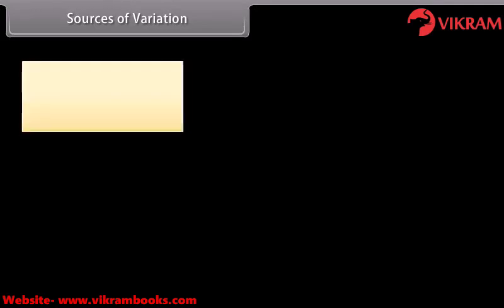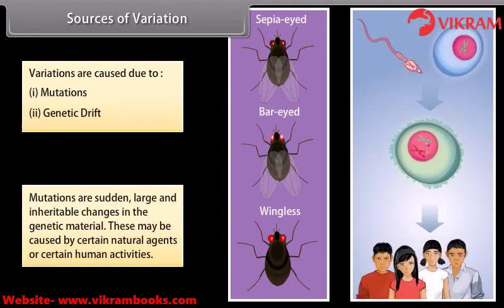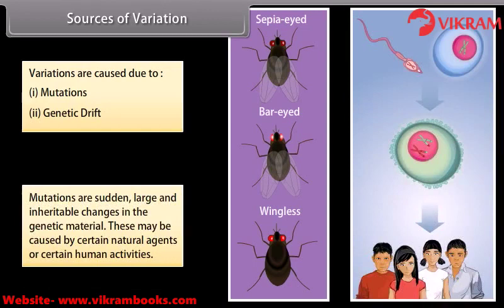Sources of variation include mutations and genetic drift. Mutations are sudden, large, and inheritable changes in the genetic material. These may be caused by certain natural agents or certain human activities.